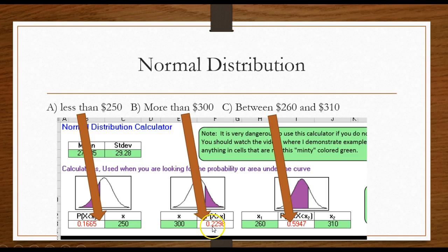So I'm finding the probability that's to the right of this value, so greater than or more than 300, the probability would be 0.2298. What about between two values? No problem, use the fourth, the third one over here, and say between 260 and 310 the probability is 0.5947.